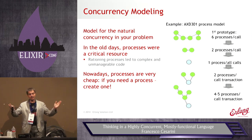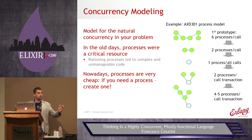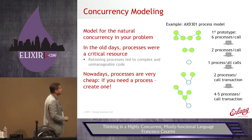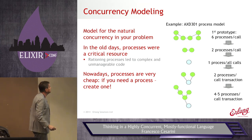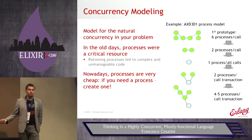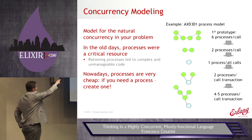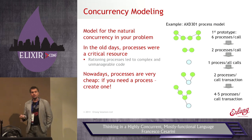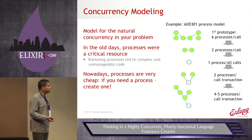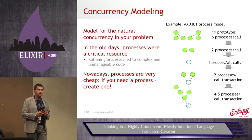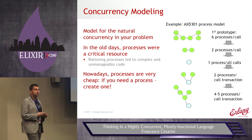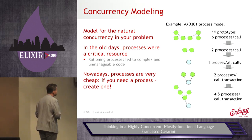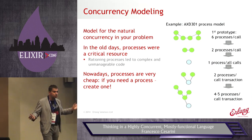The first prototype had six processes per call — six fairly complex finite state machines each running in a single process. It worked well: a few milliseconds to set up, a few to tear down. The problem was that six processes per call meant you could only have a maximum of about 5,000 calls at any one time — far short of the goal. So they got a programmer to merge those finite state machines into two processes per call — still 15,000 calls short of 30,000.